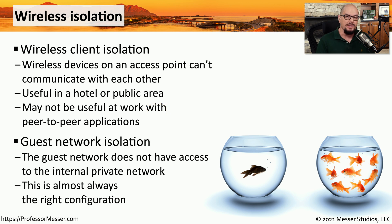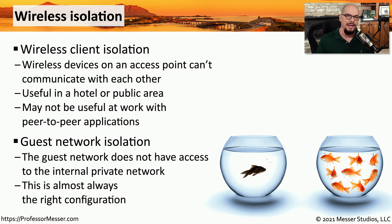Some access points allow you to have a working network and a guest network. Commonly, the guest network would not have access to other networks on that access point. This is almost always the default setting so that you can have an internal trusted network, but also allow access from guests who may need to connect to the internet — providing internet access while preventing them from accessing any devices on your private network.